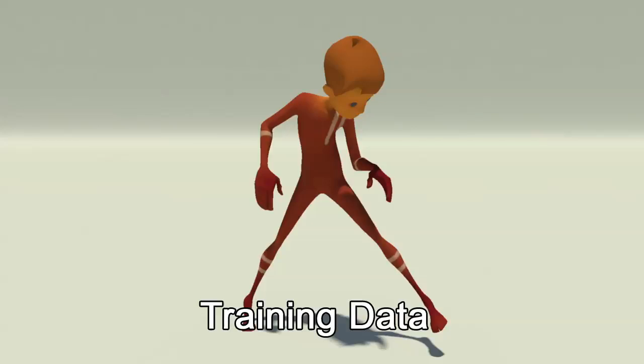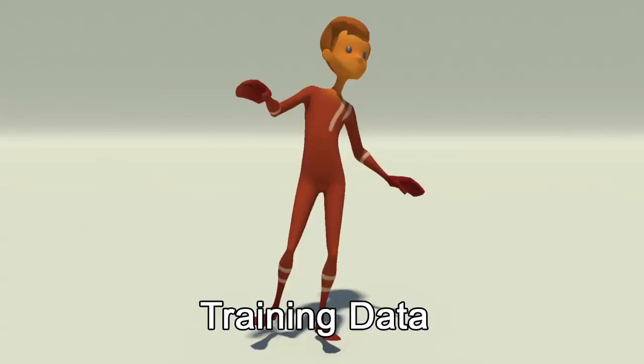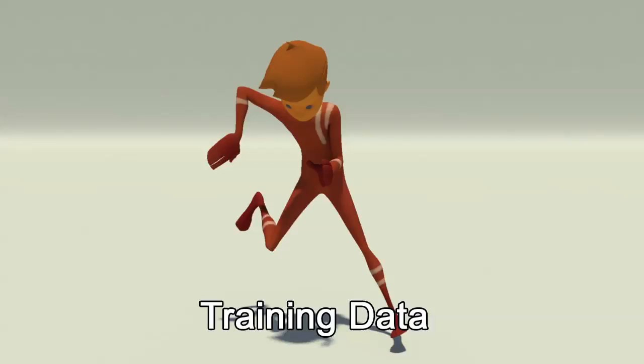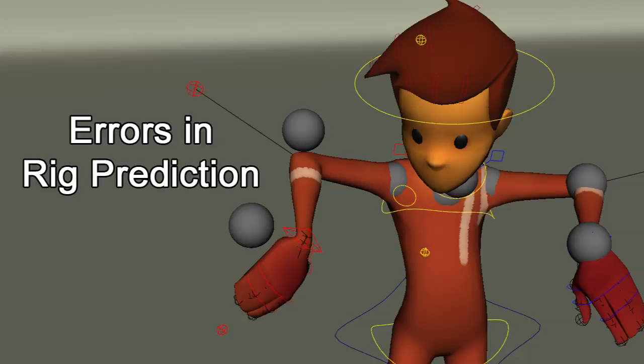Given a set of corresponding joint positions and rig attributes, we learn the mapping between them using a Gaussian process. But while this gives a good initial guess, there still exists some error in the positioning of the joints.